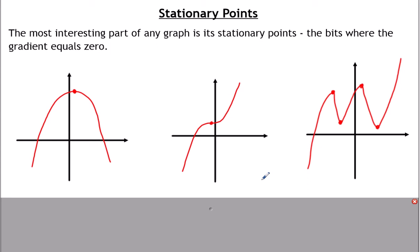Why would you be interested in stationary points? Well, it could be that on a graph this is the maximum velocity that something reaches. If you've got a graph like this, this could be the low point for a tide — the high tide and low tide. It could be the maximum force that an object is experiencing. They're usually the bits of a graph we're most interested in because it gives us a maximum or a minimum amount.